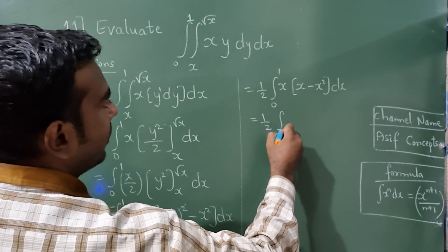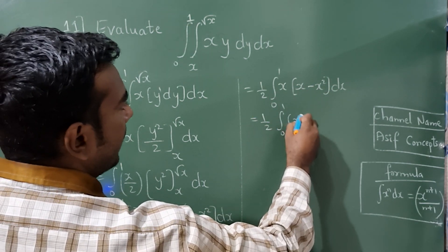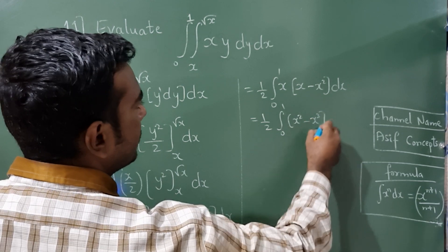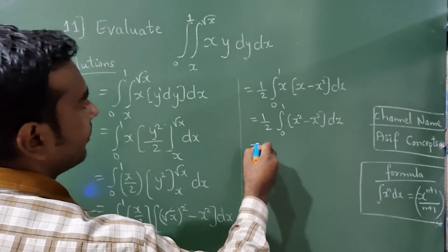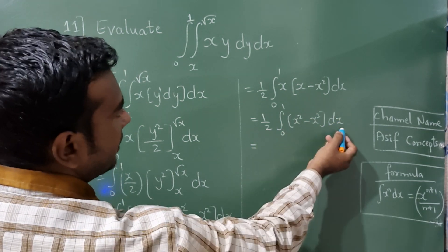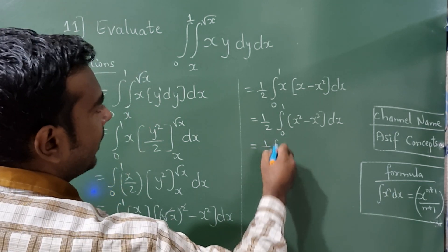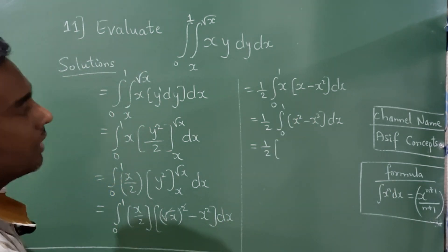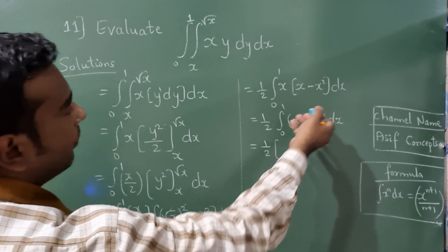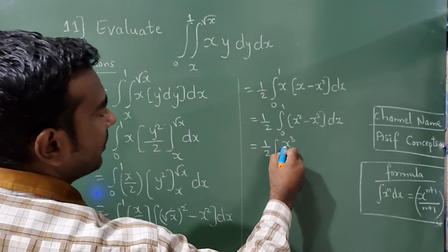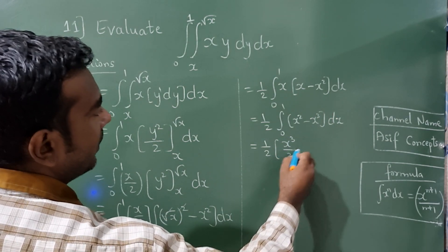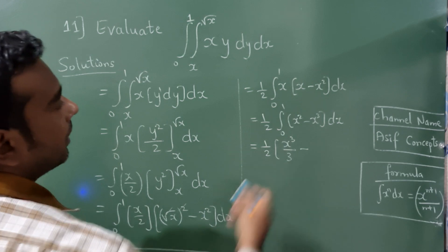Multiply this x for both. 1 by 2, 0 to 1, x square minus x cube dx. Now integrate this with respect to x using this formula. 1 by 2, whenever it is a square then add 1 to it, so it will become x raised to 3 divided by 3, and here it will be x raised to 4 by 4.